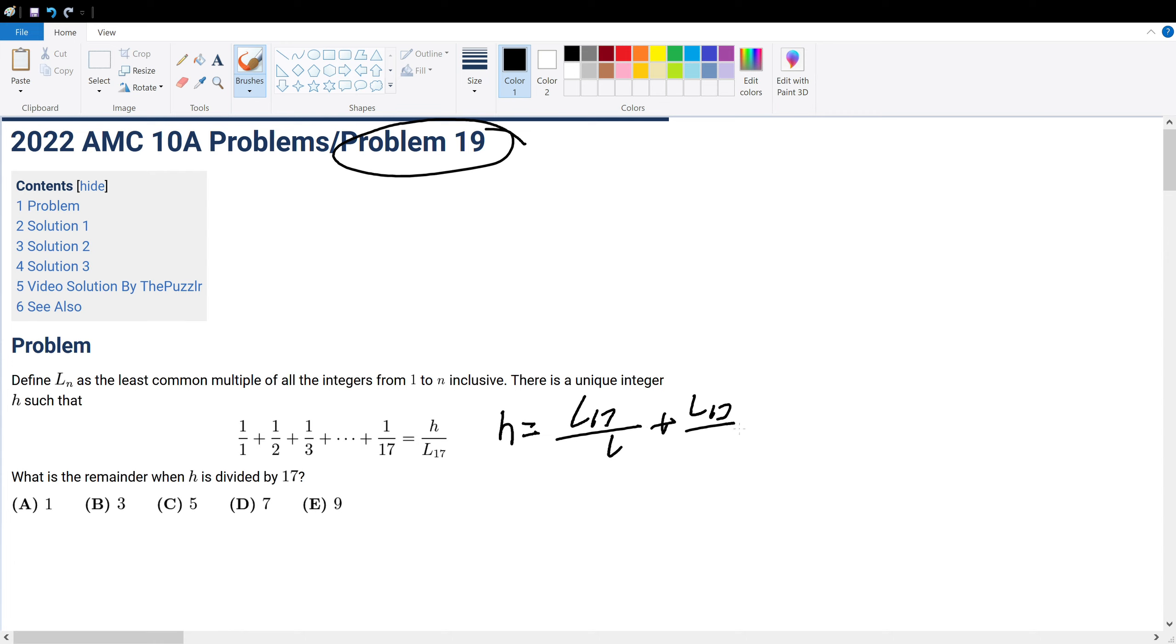First, let's simplify this formula a bit. So, H could be equal to L17 over 1 plus L17 over 2 plus dot dot dot plus L17 over 16 plus L17 over 17. Okay, let me make this more pretty.